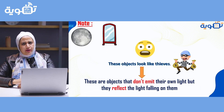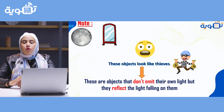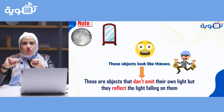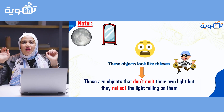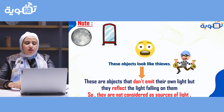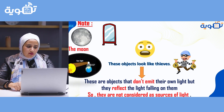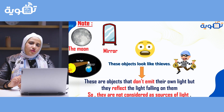What about the moon and the mirror? No. These objects look like thieves — they steal the light from another source. They are objects that don't emit their own light, but they reflect the light falling on them. So they are not considered a source of light. Like the moon, which reflects light coming from the sun.